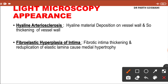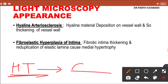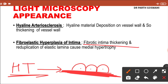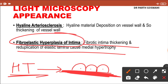The second light microscopic change is fibroelastic hyperplasia of the intima. Hypertension, being a systemic disease, affects the endothelium of the small arteries of the kidney, leading to endothelial damage. Because of repeated damage, there is chronic sclerosis and fibrosis of the intima, causing intimal thickening. Sometimes reduplication of the elastic lamina leads to medial hypertrophy, which is why it is called fibroelastic hyperplasia of the intima.